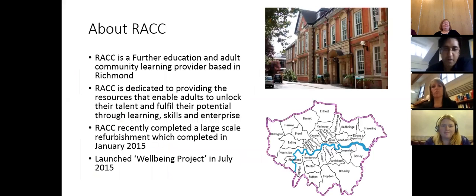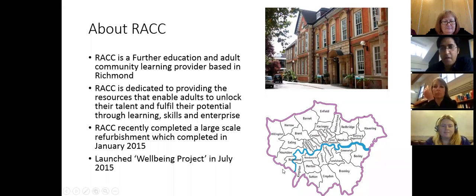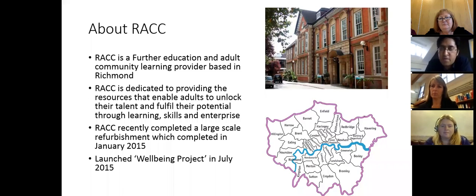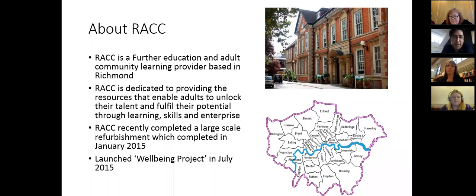A map of London is shown with the Richmond area circled. RACC stands for Richmond Adult and Community College. It is a further education and adult education provider, established since the 1830s as an industrial and technical training provider. The mission is providing resources that enable adults to unlock their talent and fulfil their potential for learning, skills and enterprise. A large-scale refurbishment was completed in January 2015, and the well-being project launched in July 2015 with an event in the youth theatre.